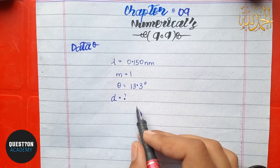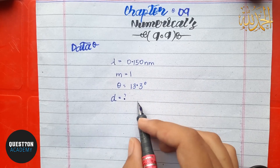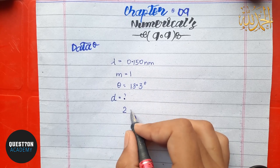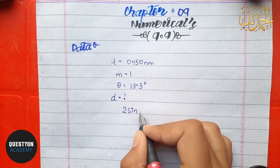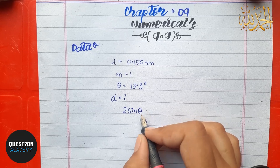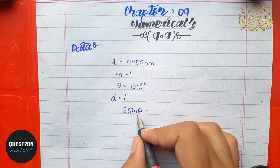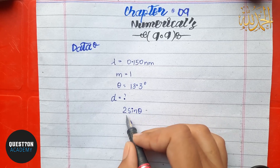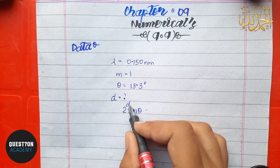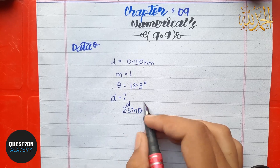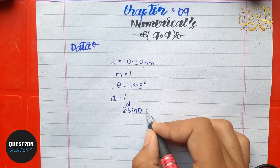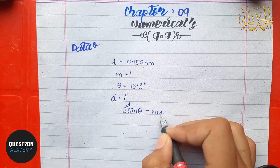Now for the solution, we will use the formula that we have used in every numerical. We know that the formula is: 2d sin theta is equal to n lambda. This is Bragg's Law.